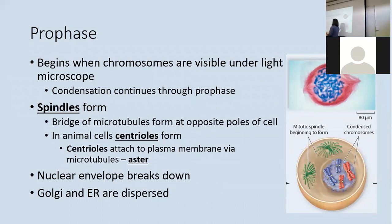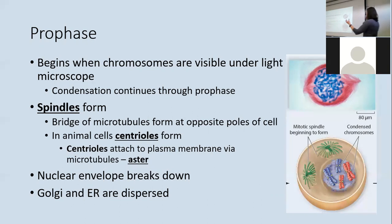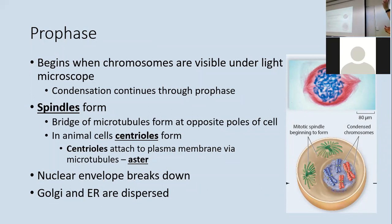Prophase is the first phase. It begins when a person can see the chromosomes using a light microscope — which happens because the DNA has condensed into mitotic chromatin. As the DNA condenses more and more, it becomes thicker and visible under a light microscope. Also during prophase, the spindles begin forming at opposite ends of the cell, with microtubules that will eventually grab onto the chromosomes.